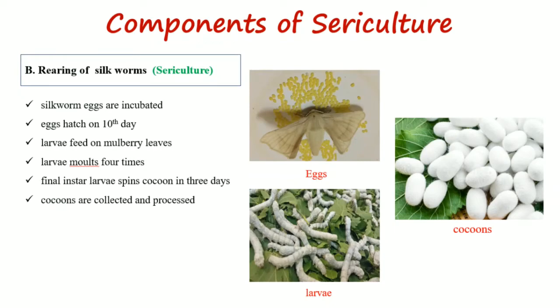Next is the rearing of silkworms. First of all, the silkworm eggs are incubated. The incubation temperature is 23 to 24 degrees centigrade. These eggs hatch on the 10th day, though variation also exists — hatching can occur from the 7th to 14th day after incubation. The larvae then feed on mulberry leaves. These larvae molt four times, so there are five instar stages during the life cycle of silkworms. The final instar larva spins a cocoon within three days, and the cocoons are then collected and processed.